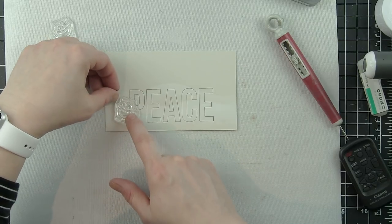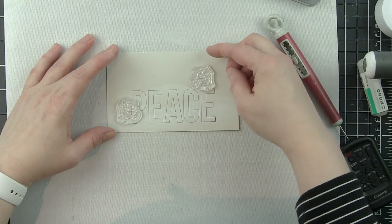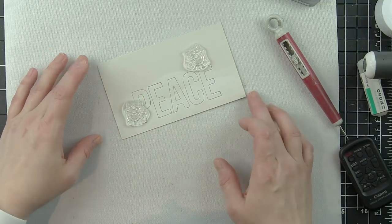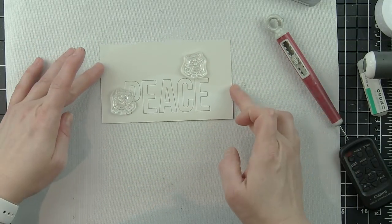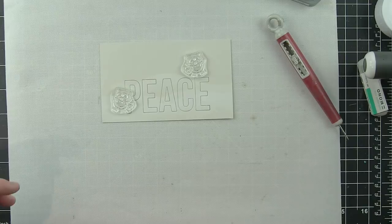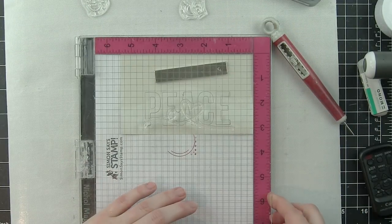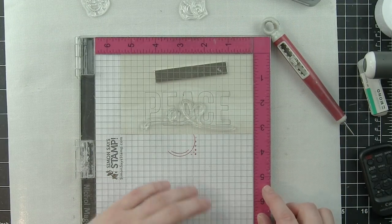I'll be using two of the adorable little owl images from You Make My Heart Melt. One is going to be kind of leaning up against the letter P in the word peace, and the other one is going to be tipped or balancing up there on top of the letter E.